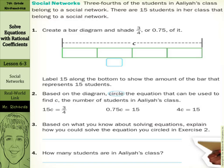The first thing we're going to do here is to create a bar diagram and shade three-fourths, or 75-hundredths of it. We have one, two, three, four bars, and if we want to shade three-fourths of that, that's just going to be one, two, three.